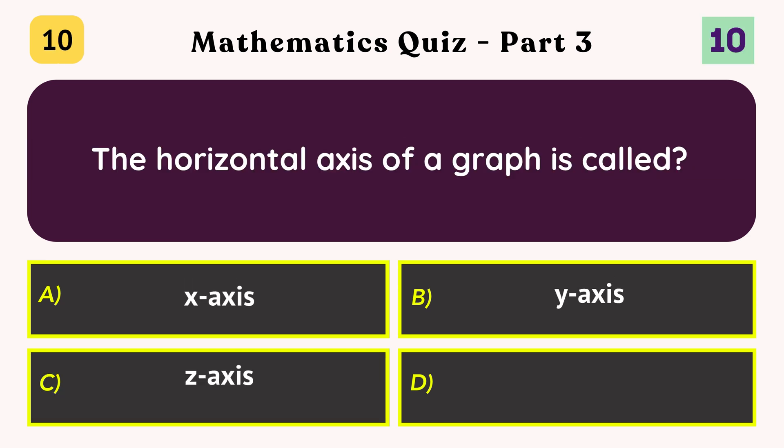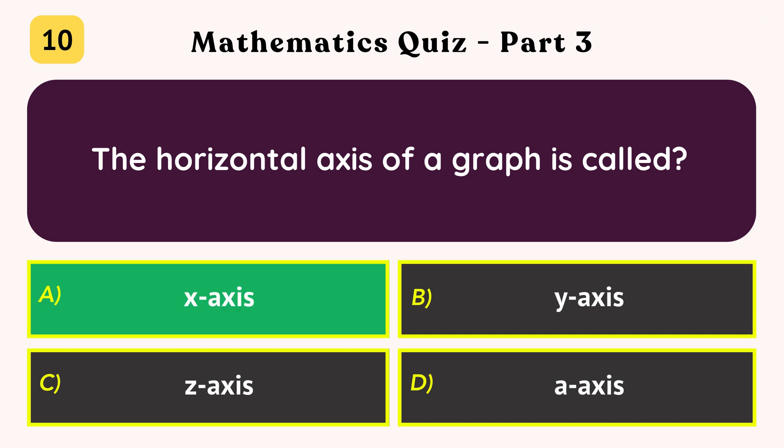The horizontal axis of a graph is called the x-axis.